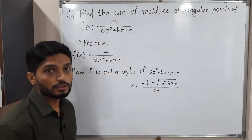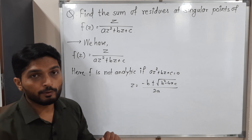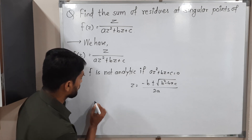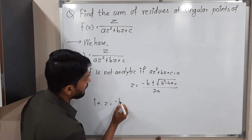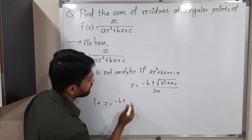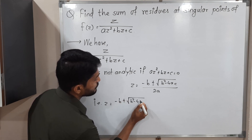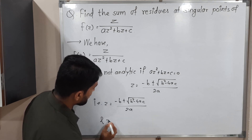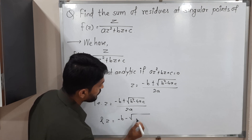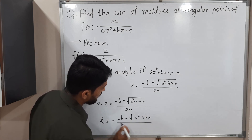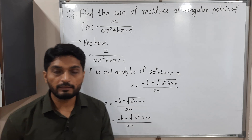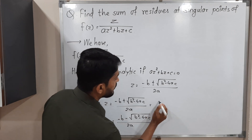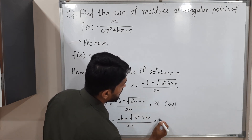So I got the value of z where the function is not analytic — actually two values. When you take the plus sign you get the first point, z = (−b + √(b²−4ac)) / 2a, which is the first singular point. The second is z = (−b − √(b²−4ac)) / 2a. These expressions are very complicated and not easy to handle, so I will call them alpha and beta.